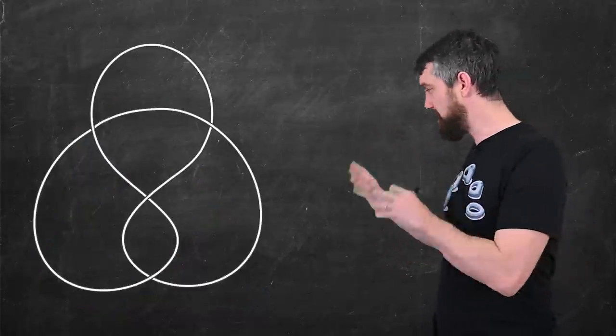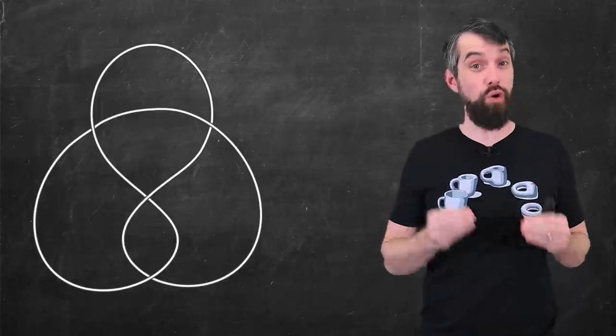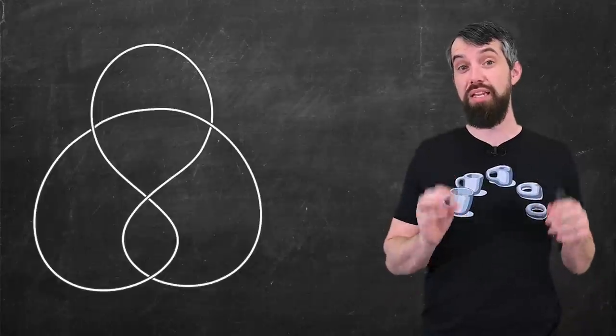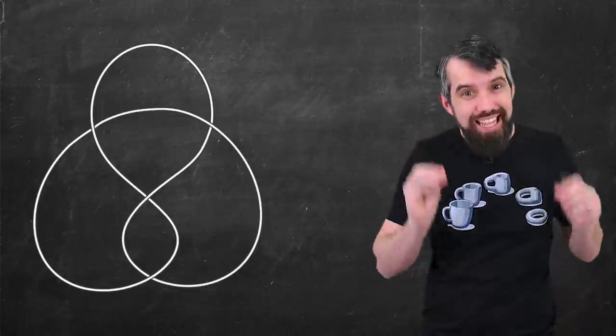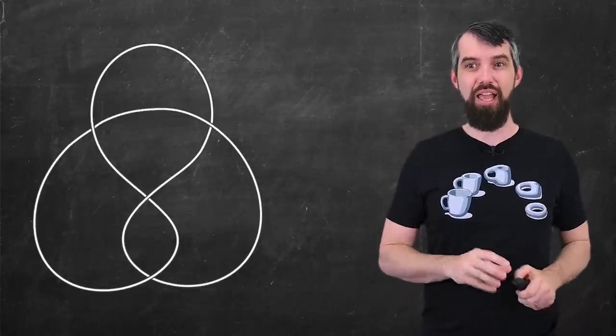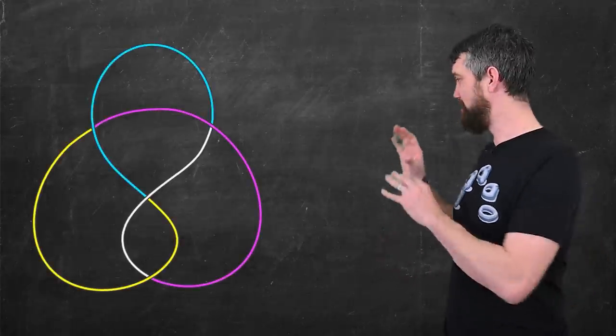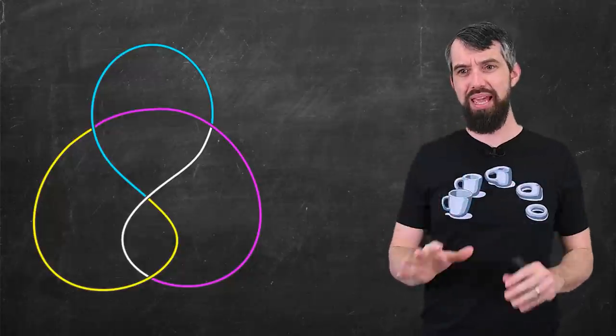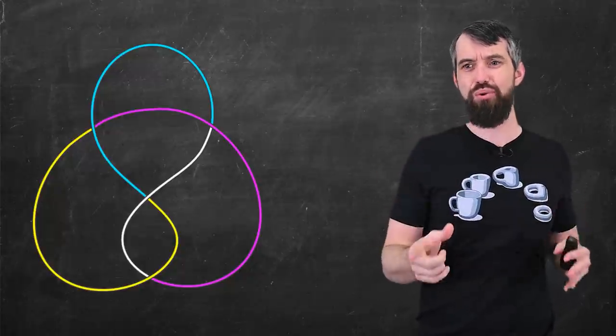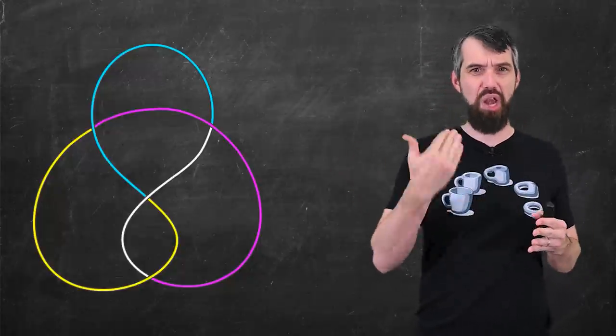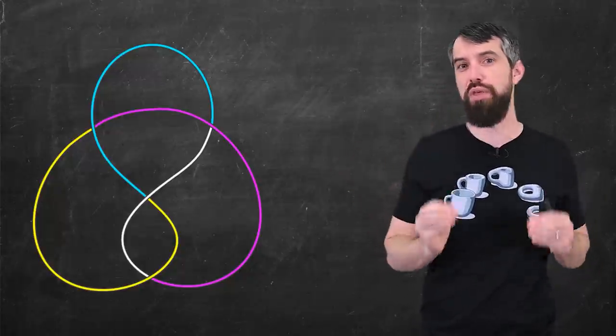This is a different knot. It now happens to have four crossings, but that's not going to eliminate the idea that it's tricolorable. But it isn't tricolorable, nevertheless. If I try, for example, I'm going to put the blue, I'm going to put a yellow, I'm going to put a pink in, I then get this final strand that I've left in white that I need to color one of those three colors, but I can't do it without violating the rule.